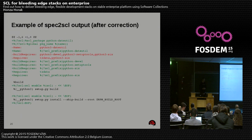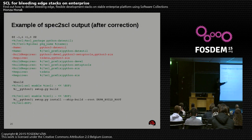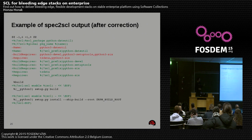Let's see what the spec2scl tool does. If you download a package from Fedora Koji and run it on the spec file, it pretty much adds the following things — sometimes it needs some correction, but it's quite readable. For example, if you build a package for the Python stack, you'll probably need build requires set to packages from the stack. Anyone who reads RPM specs on a daily basis can read these. It's really about adding a few macros and it's usually done.